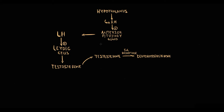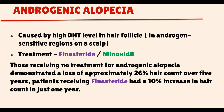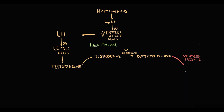When testosterone enters the hair follicle, 5-alpha reductase converts it into dihydrotestosterone, which acts on intracellular androgen receptors in the hair follicle. Scalp hair is generally divided into androgen-sensitive and androgen-insensitive regions. The most well-known androgen-sensitive region is the crown, also called the vertex of the scalp. Dihydrotestosterone binds to androgen receptors in sensitive follicles and activates genes responsible for hair miniaturization — a process when big becomes small.